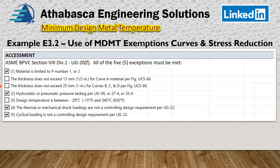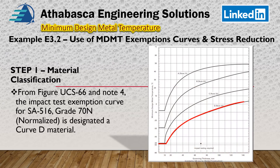Our design temperature and our MDMT are both very low. In step one, we use the UCS-66 curve and note four. Following note four, we look up the material — it's SA-516 grade 70, which is a normalized, very tough plate — and it falls under category D. So that's where we all start.